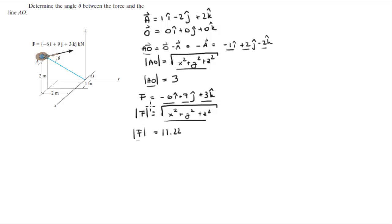Now that you have the magnitude of both vectors and the Cartesian vector form of the two vectors you can find the angle between them with the definition of the dot product. So you know that by definition the dot product of AO and F is the same as the magnitude of AO times the magnitude of F times the cosine of the angle between them.